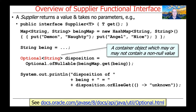You can think of an Optional as essentially a container object which may or may not contain a null value. But irrespective of that, you can use it without having to worry about null pointer exceptions. That's the beauty of Optional.